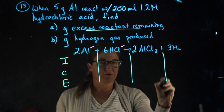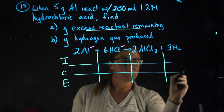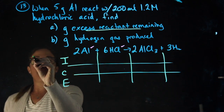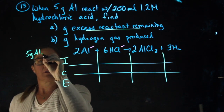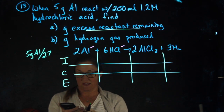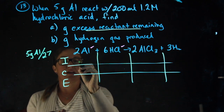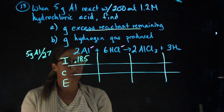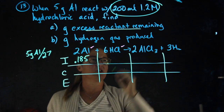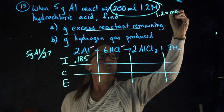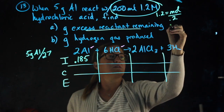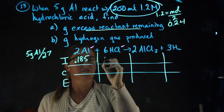Some of you like to do this and split it into rows and columns — that's certainly helpful. I need to fill this chart in in moles. I have 5 grams of aluminum. To get the moles of aluminum, I'm going to take the 5 grams and divide by the molecular weight, which is 27. 5 divided by 27 gives me 0.185 moles of aluminum. For the hydrochloric acid, I have the molarity and the volume. I'm going to do molarity equals moles over liters: 0.2 times 1.2 gives me 0.24 moles of HCl.